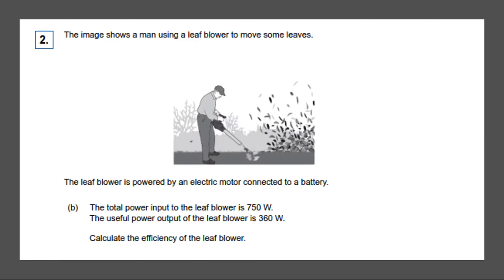Our first exam question states, the image shows a man using a leaf blower to move some leaves. The leaf blower is powered by an electric motor connected to a battery. The total power input to the leaf blower is 750 watts. The useful power output of the leaf blower is 360 watts. Calculate the efficiency of the leaf blower.